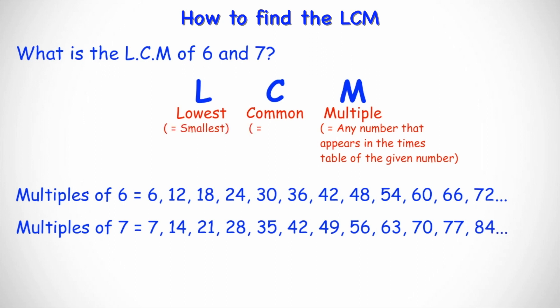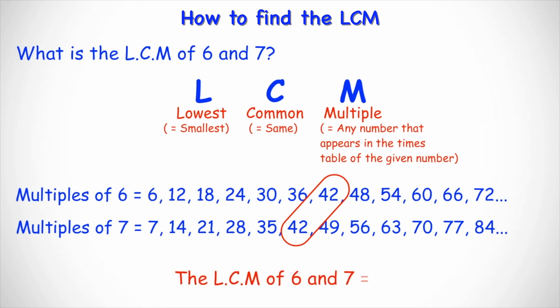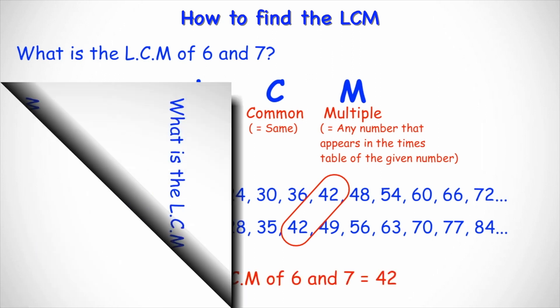Lowest means the smallest and common means the same. So lowest common multiple effectively means: what is the smallest number appearing in the times tables for the given numbers that is the same? If we look carefully in both lists, we can see that 42 appears in the times table for both 6 and 7. Therefore the LCM of 6 and 7 equals 42.